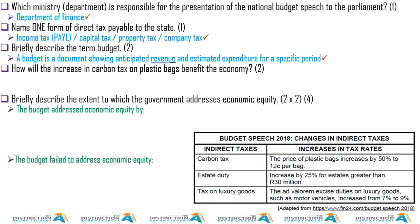The government can also borrow from the IMF or the World Bank. For example, the South African government was recently given money by the IMF with regards to COVID-19.